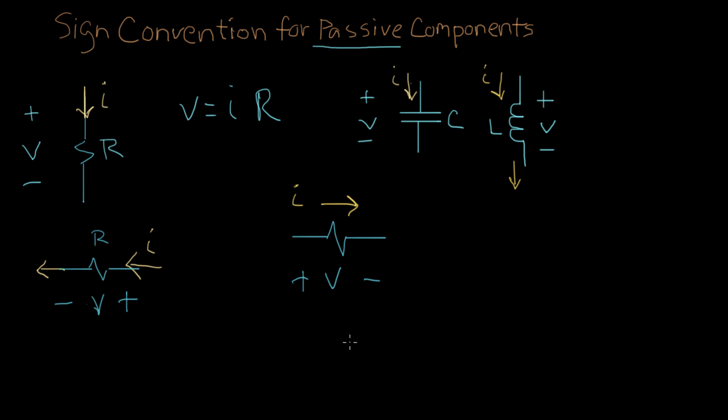And that's basically the idea of a sign convention for passive components. When we're setting up a circuit, if we have a complicated circuit, we have to give names to all the voltages and all the currents. And this is the way you do it to make sure that Ohm's law comes out with the correct sign. That's why we have this sign convention.